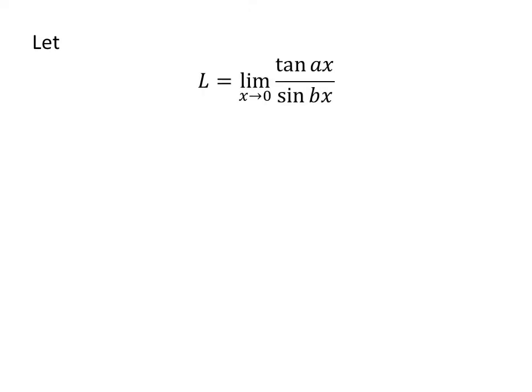Let us assume L is the limit of tangent of a times x upon sine of b times x as x approaches 0. As x approaches 0, the numerator tangent of a times x also approaches 0 and the denominator sine of b times x also approaches 0.